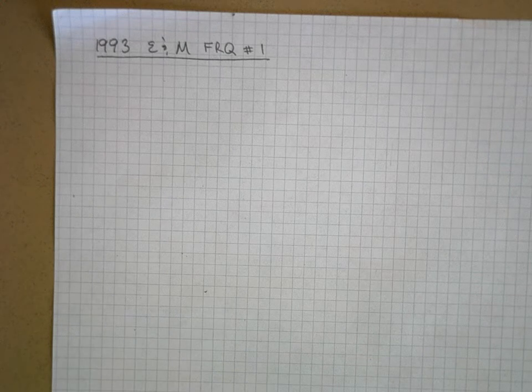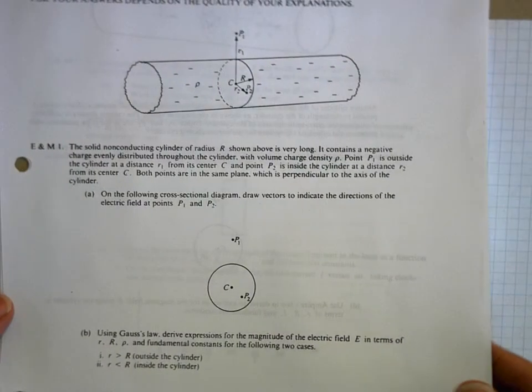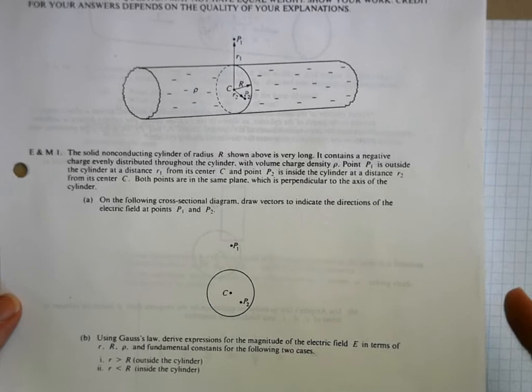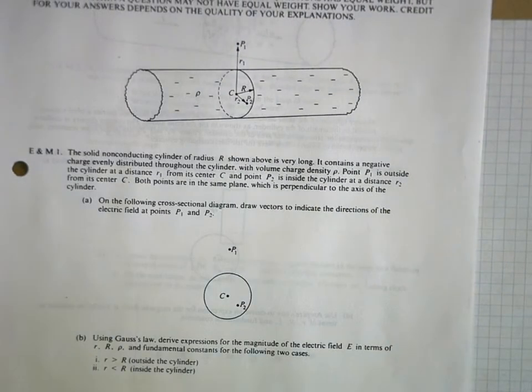Let's do the 1993 E&M FRQ number one, which is right here. And this first one, it's a pretty straightforward one, actually.